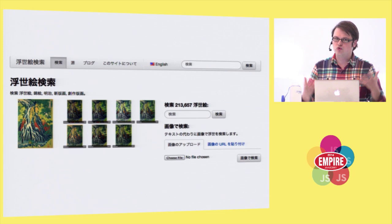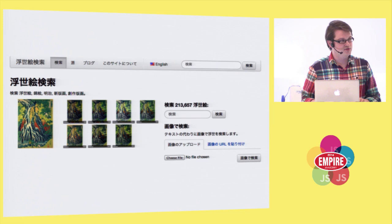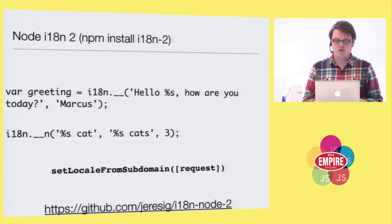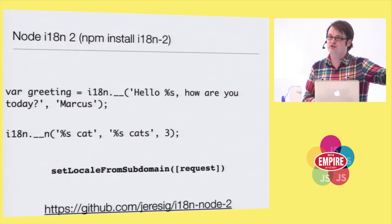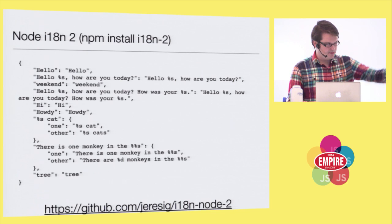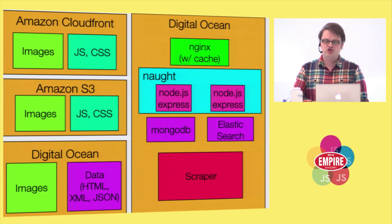What I really wanted to talk about today were the tools I've been developing in the process of building this project. One of them is a Node module primarily used with Express for doing internationalization and string translation. For example, you can set it so that if someone accesses your website from a certain subdomain — in my case ja.ukiyo-e.org — they get the Japanese version of the website with all strings translated to the correct form. If this interests you, it's up on both GitHub and NPM.